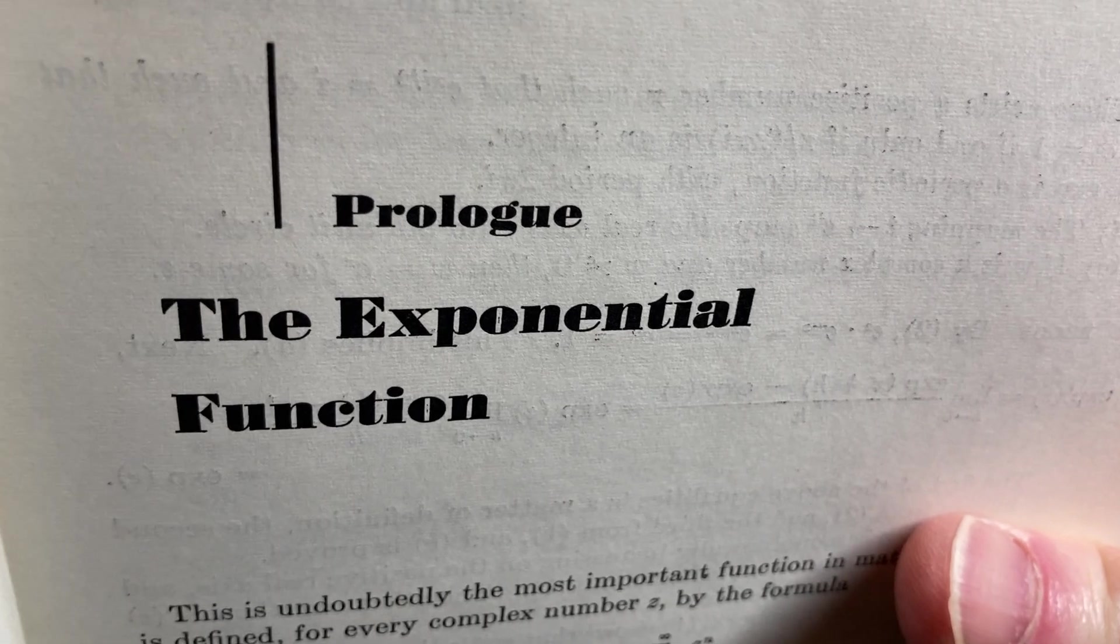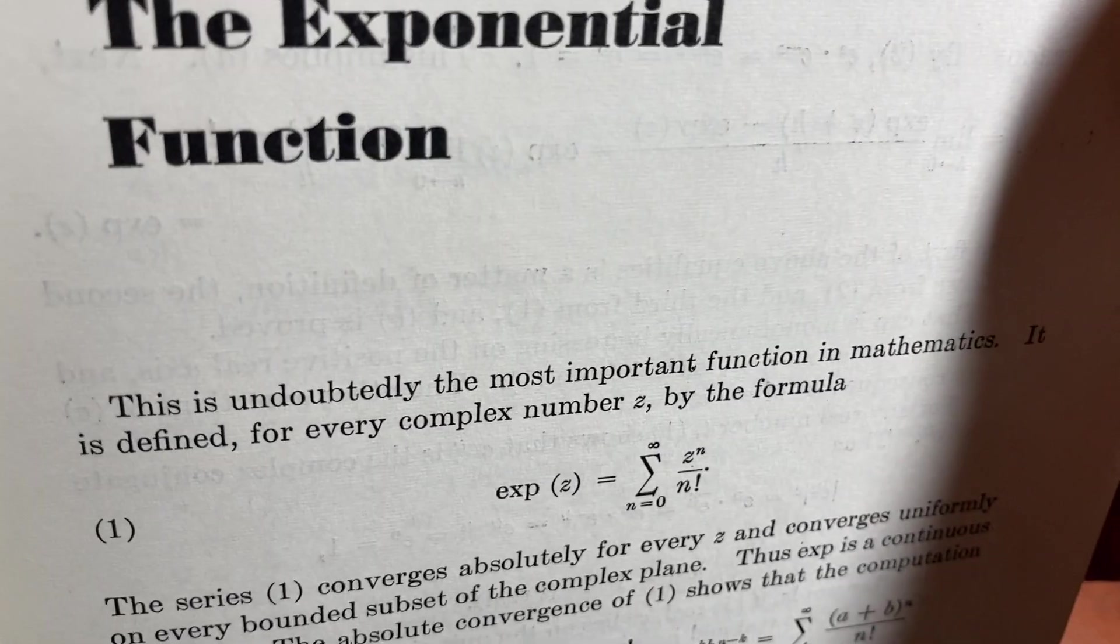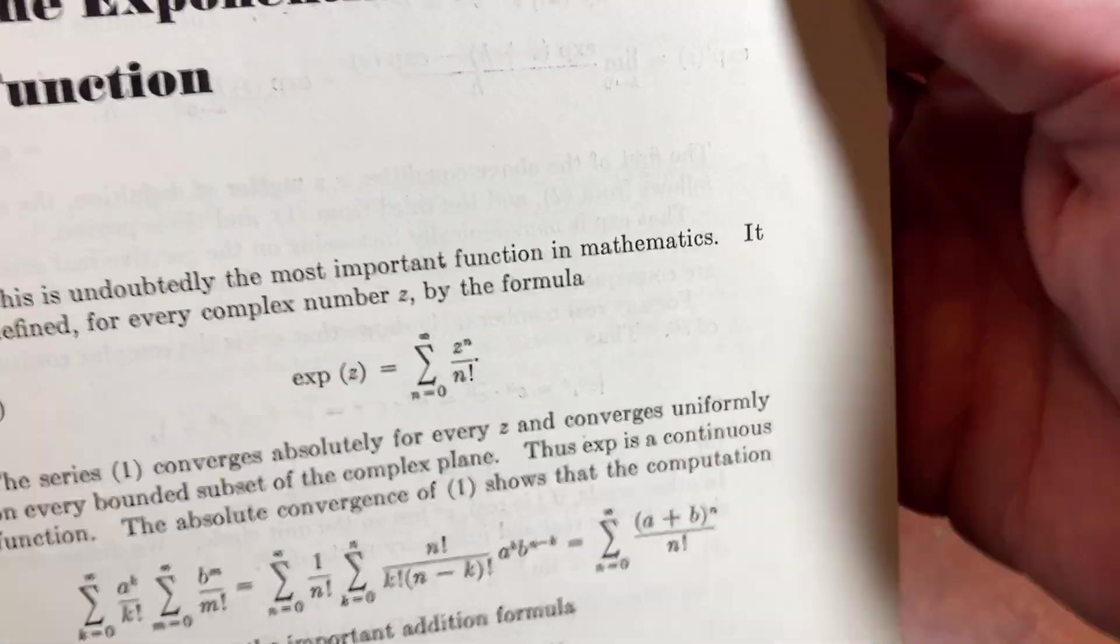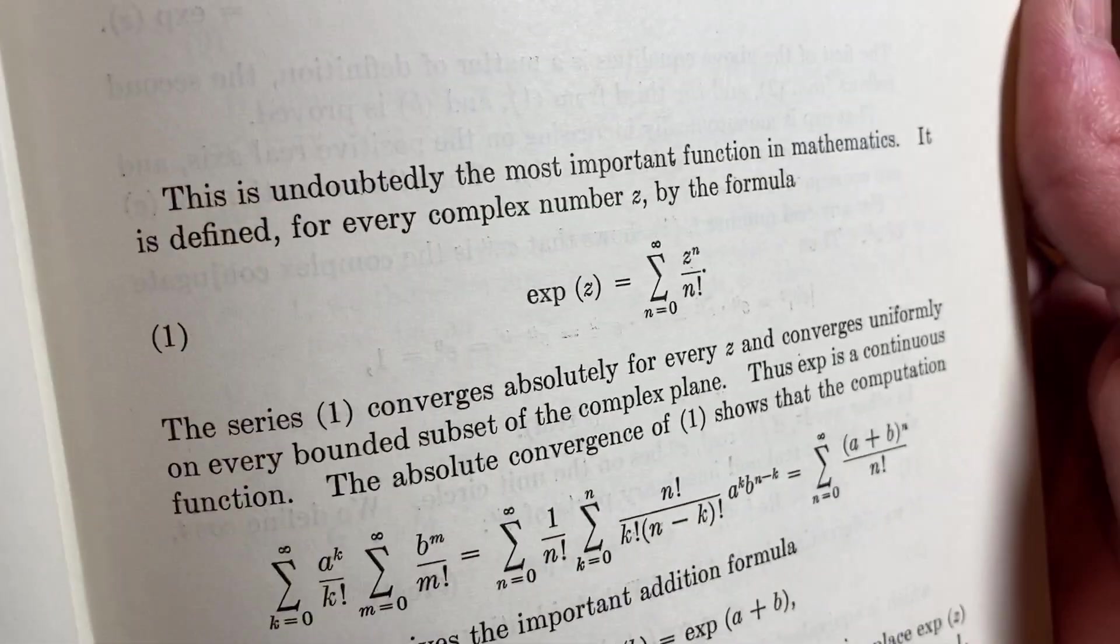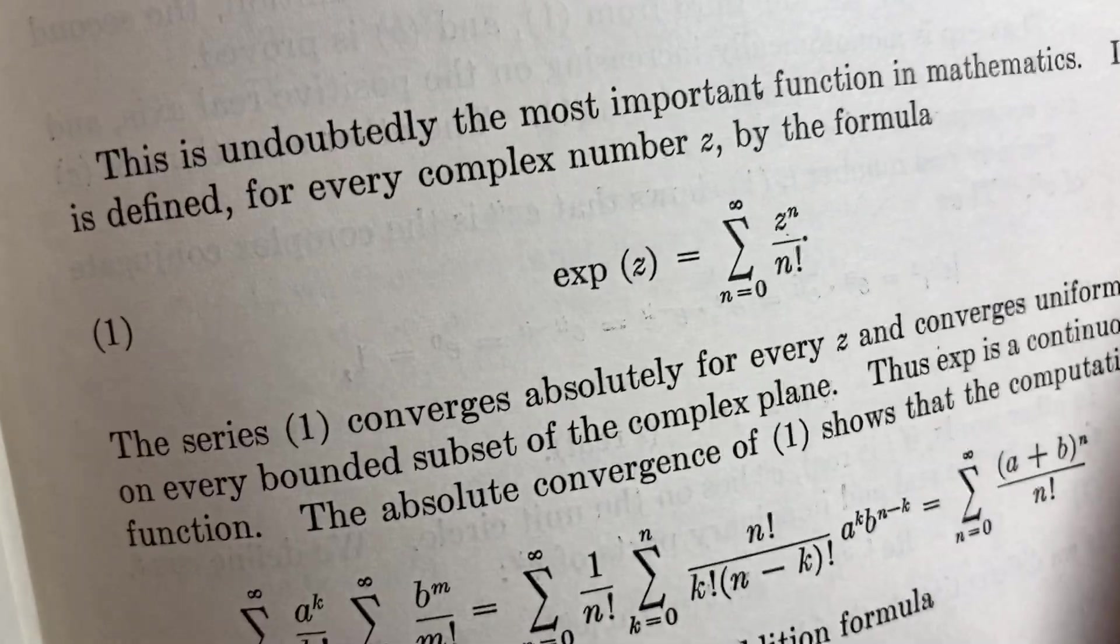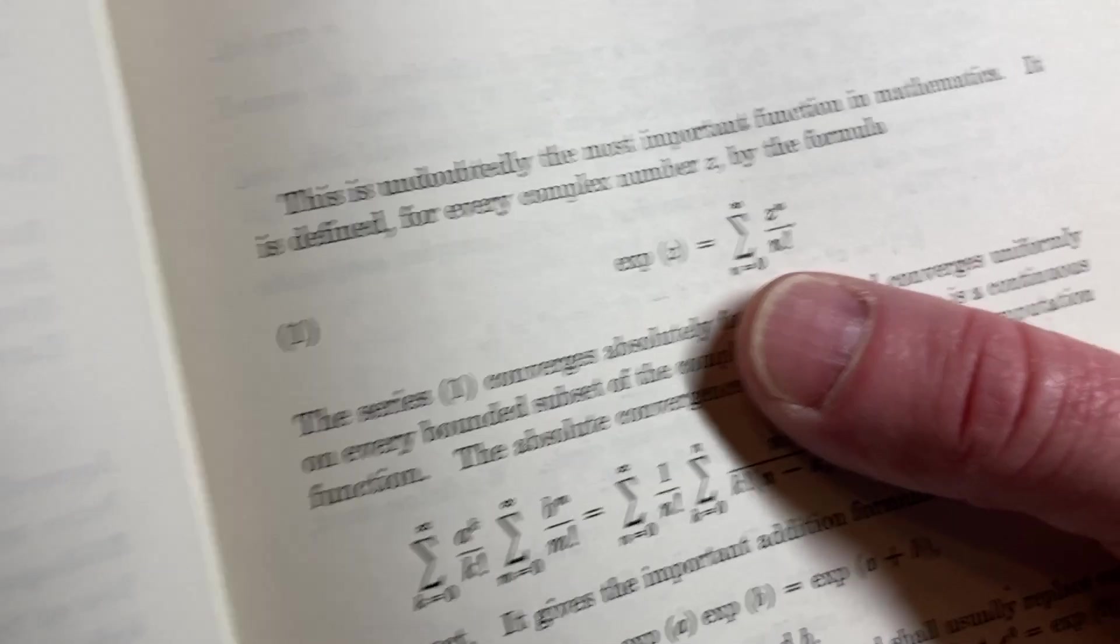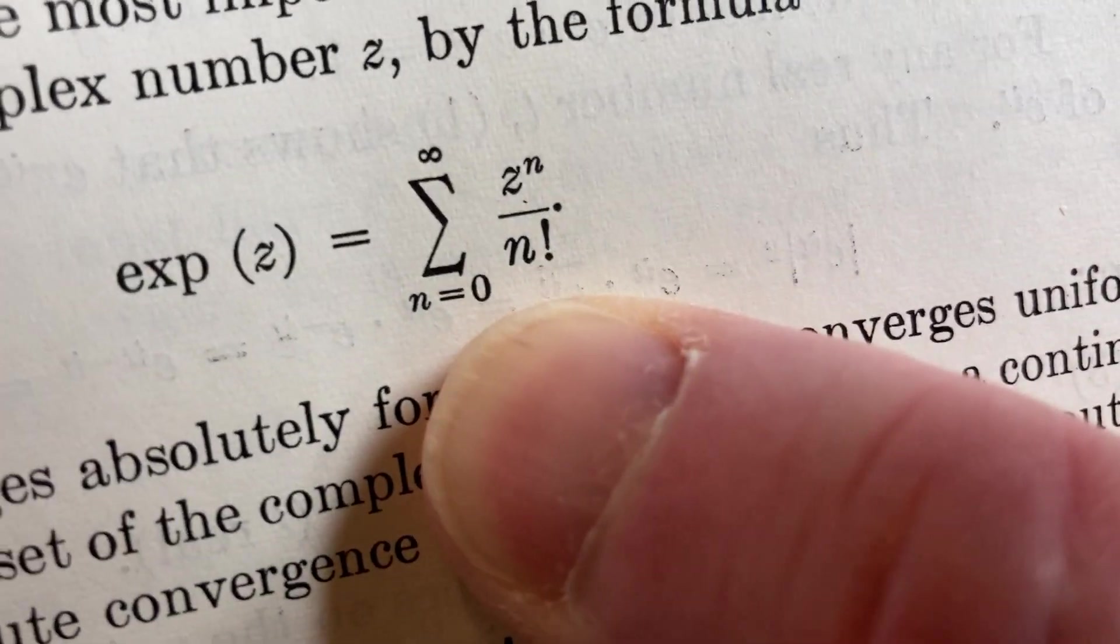I just want to show you something in the actual book. The exponential function: this is undoubtedly the most important function in mathematics. It is defined for every complex number z by the formula, and they write exp(z). That's basically e to the z.